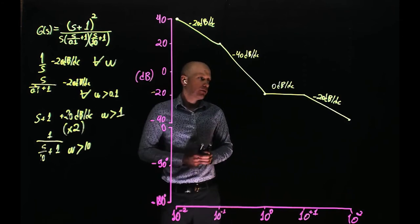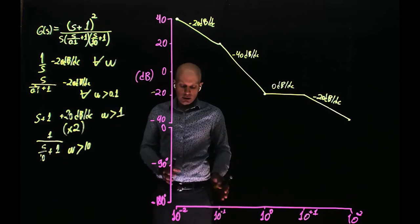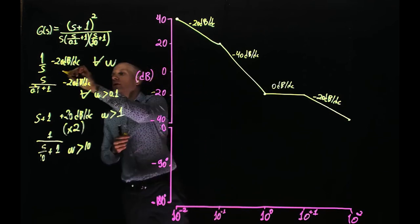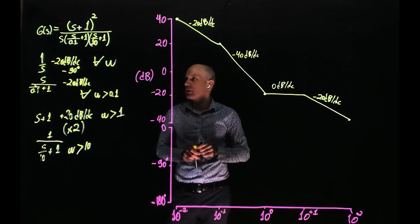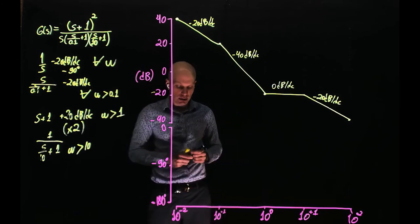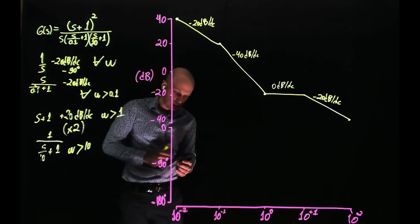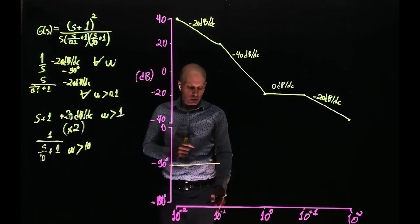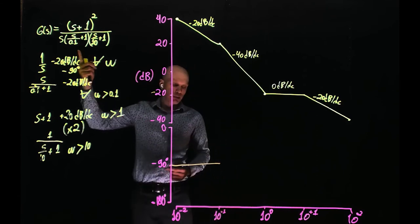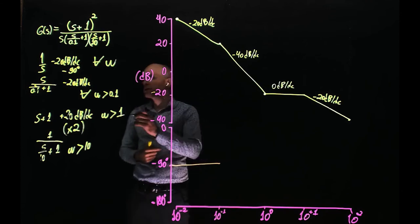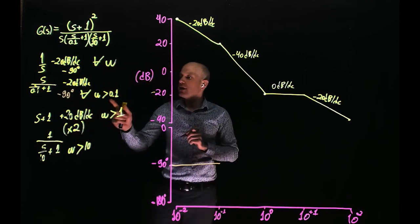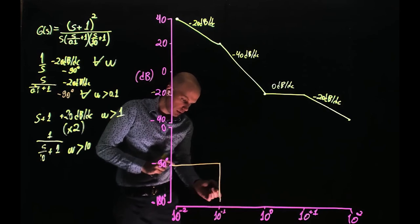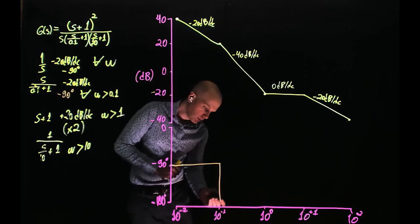Now let's look at the phase — the phase is easier. At low frequencies, the pole at the origin adds negative 90 degrees to the phase everywhere on the Bode plot. So the phase starts at negative 90 degrees. When you cross the first cutoff frequency of the real pole at 0.1 radians per second, this pole adds another negative 90 degrees for all frequencies greater than 0.1. So from negative 90 degrees, we go down by another 90 degrees, and the phase becomes negative 180 degrees.